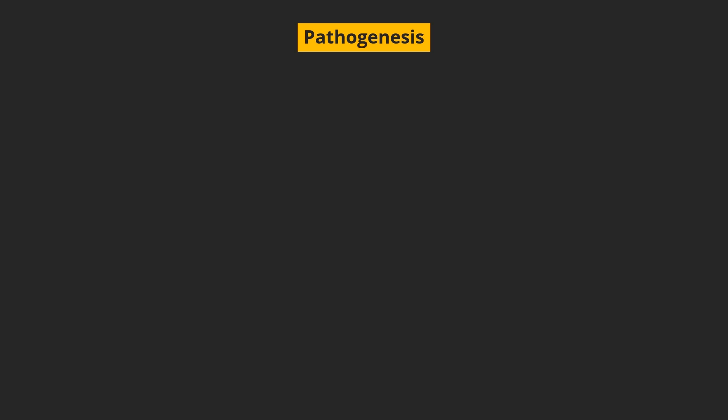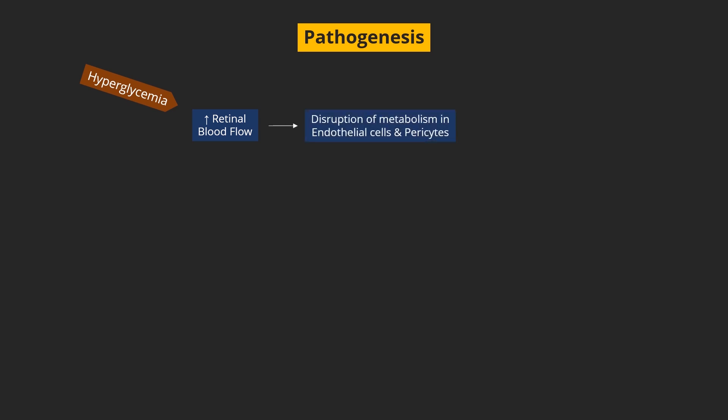Pathogenesis of diabetic retinopathy. Hyperglycemia increases retinal blood flow and disrupts intracellular metabolism in retinal endothelial cells as well as in pericytes, which are the cells that wrap around the capillary wall and influence blood flow and capillary permeability.